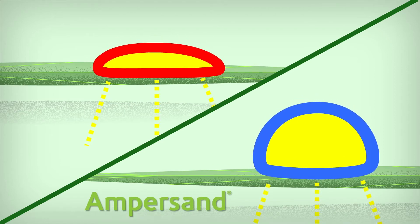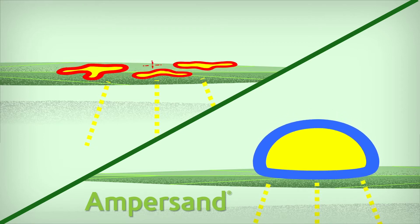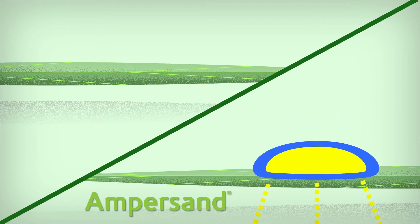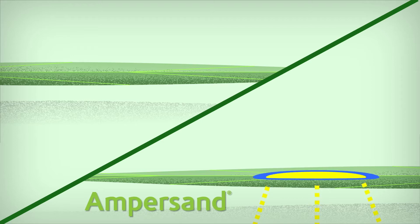Systemic or translaminar pesticides must be absorbed to be effective. This requires time as a liquid interface. Absorption stops when the drop dries.